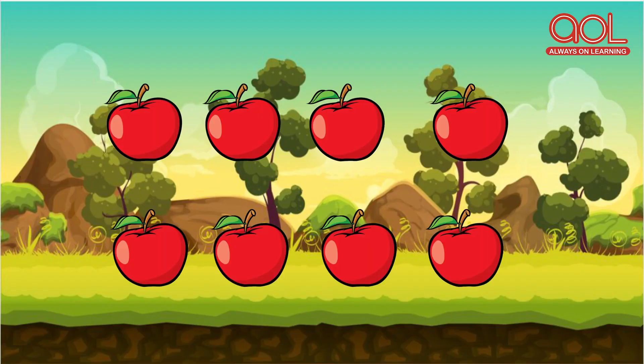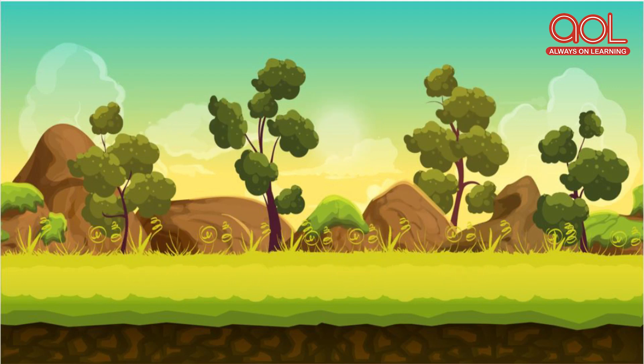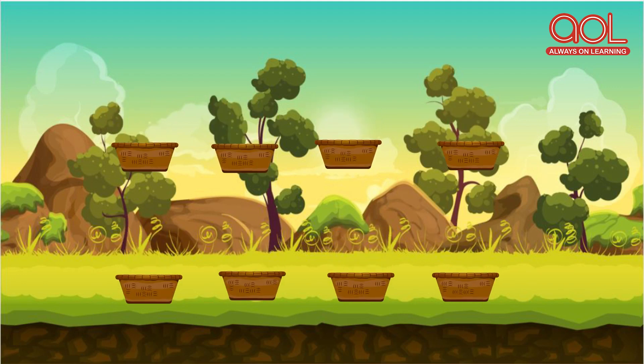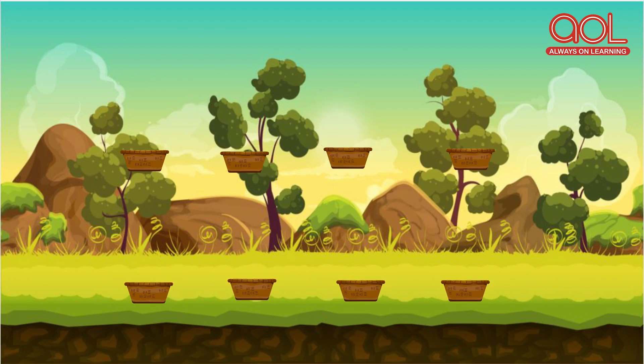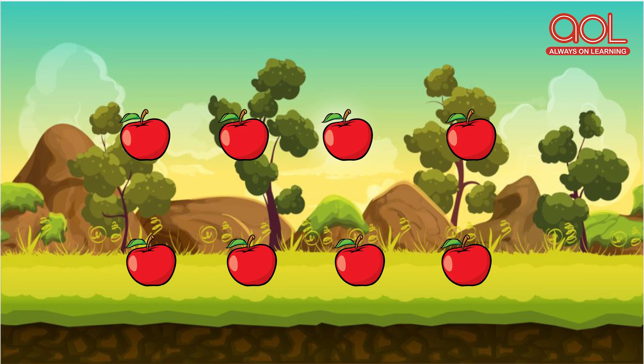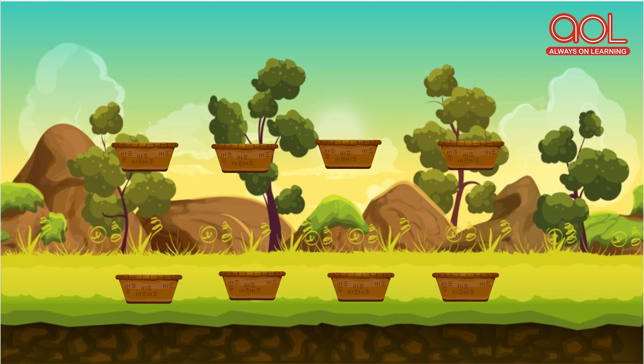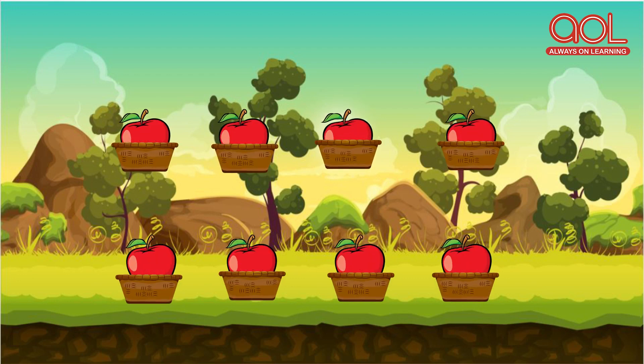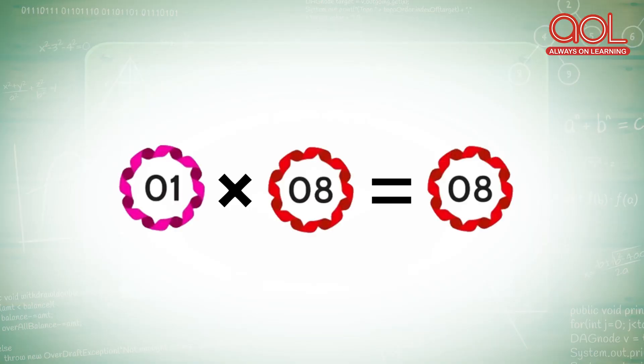I have 8 apples with me. I would like to arrange them equally in the basket in such a way that all are in equal number. So we will see how I arrange all these apples. Now, I take 8 baskets and start placing 1 apple in each basket where all 8 baskets have 1 apple in them. So I can write it as 1 into 8 equal to 8.